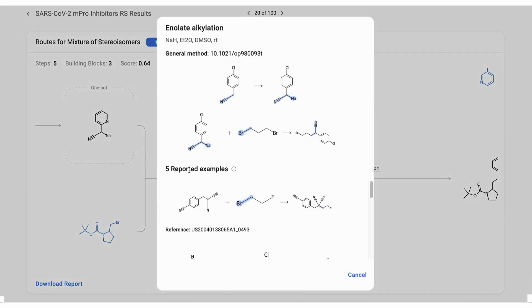The name of the transformation employed is displayed above the arrow. Click on it to reveal a window with additional useful information. In addition, general reaction conditions are provided along with several journal and patent examples employing similar transformations.